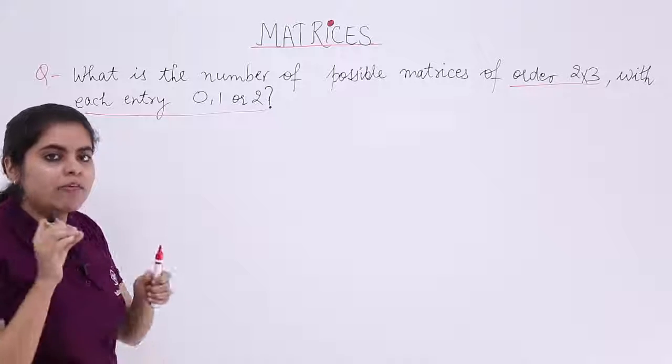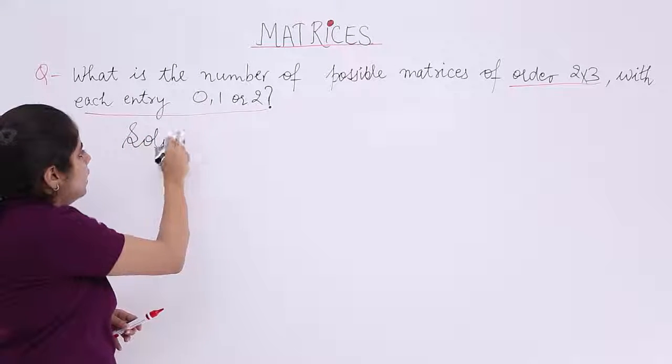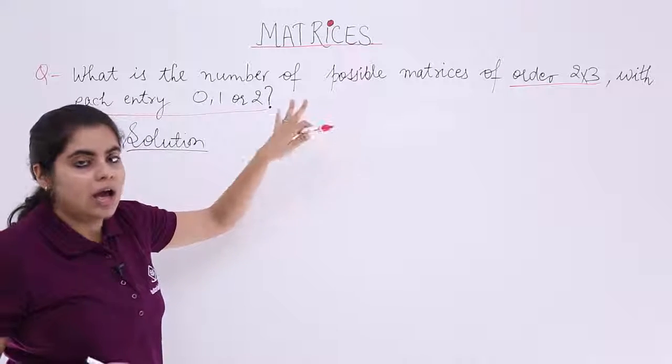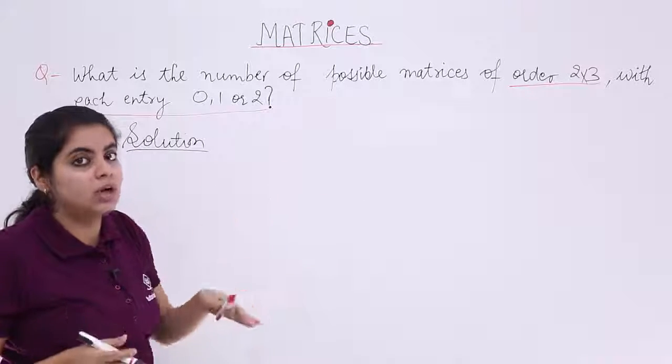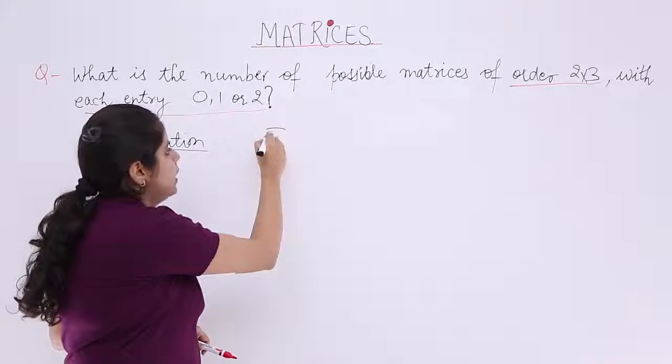I have a brief idea what the question says, but still we will have to see it in detail. Matrices are actually denoted with the order first. The order is very important and the order is given to me as 2 by 3.